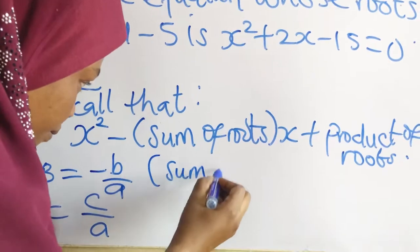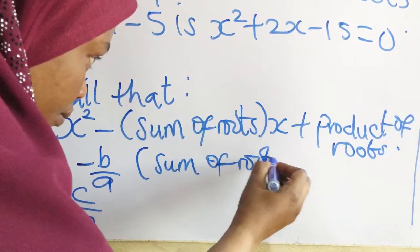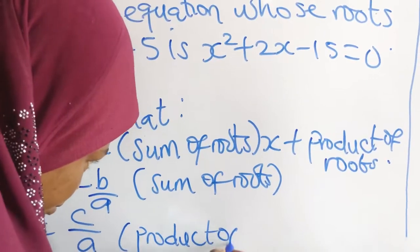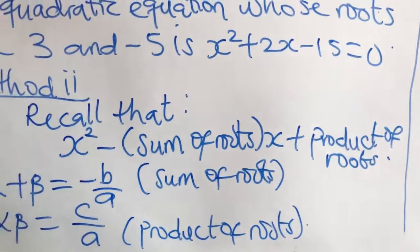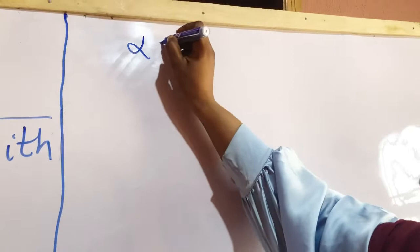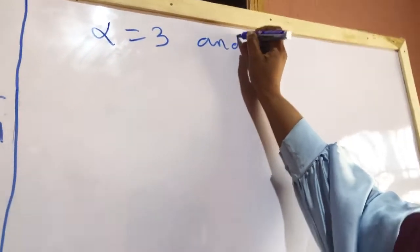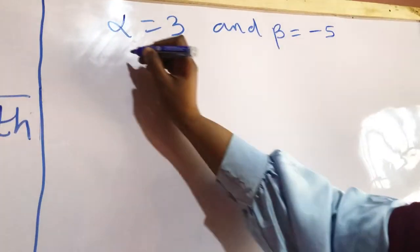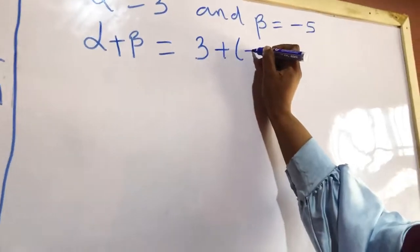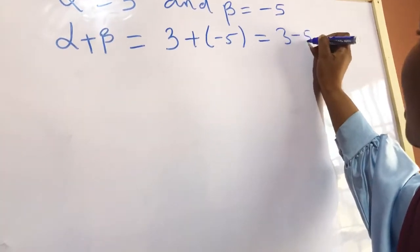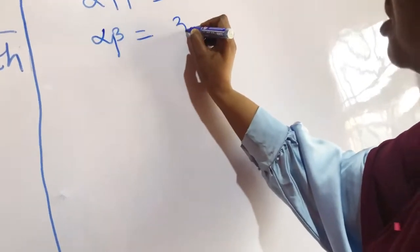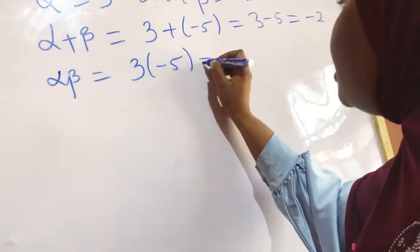Here is the sum of roots and here is the product of roots. Alpha is equal to 3 and beta is equal to minus 5. So alpha plus beta will be equal to 3 plus minus 5, which is 3 minus 5, and the answer is minus 2. Product of roots will be equal to 3 multiplied by minus 5, and that is minus 15.